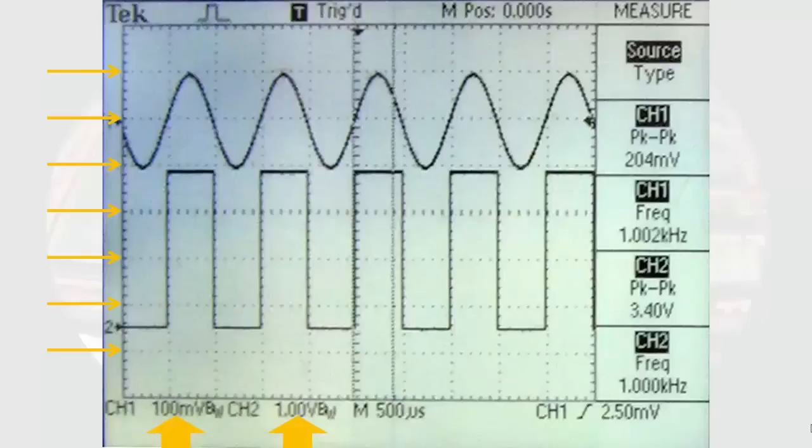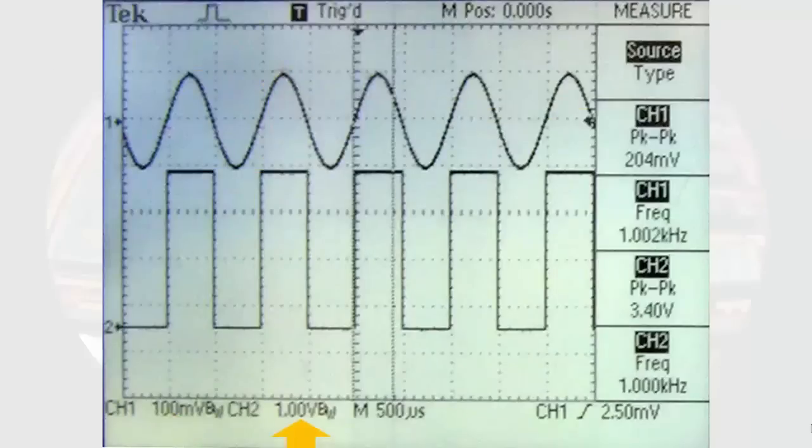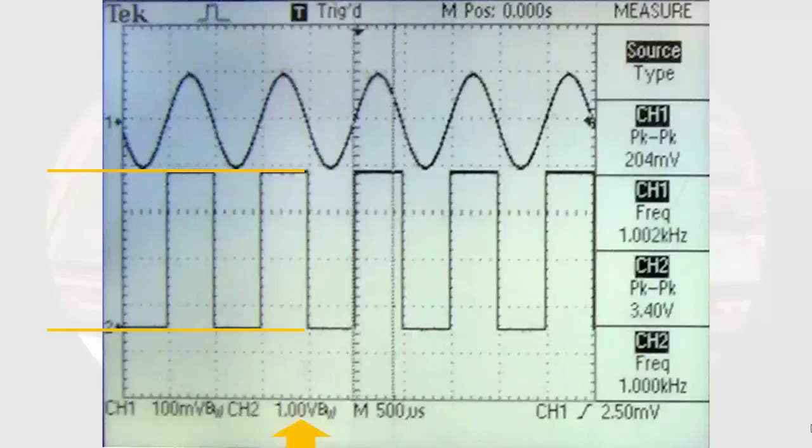We see that for channel 1, each division here represents 100 millivolts. And for channel 2, each division represents 1 volt. So for channel 1, from the top of the wave to the bottom of the wave is about 2 divisions. Since it is 100 millivolts per division, that means that this wave is 200 millivolts peak to peak. For channel 2, each division represents 1 volt. From the top of the wave to the bottom of the wave, there are about 3.4 divisions at 1 volt per division. This gives us a value of 3.4 volts peak to peak for the waveform.